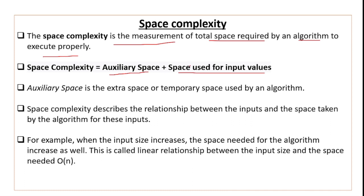These two combinations together provide your space complexity. Auxiliary space is the extra or temporary space used by an algorithm at the time of execution. If there are temporary variables that are used, the space for those will be considered auxiliary space.